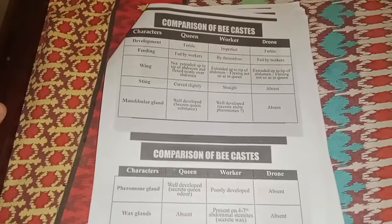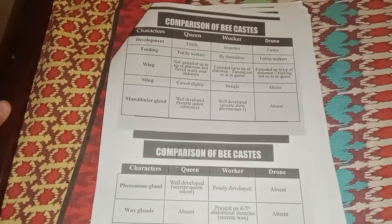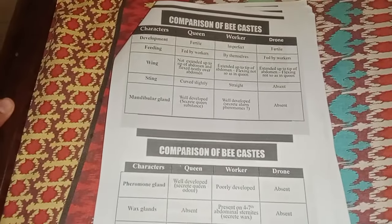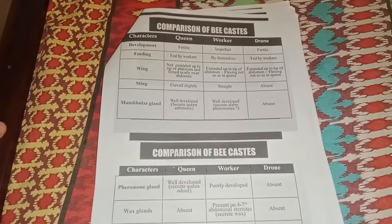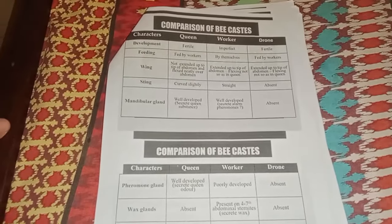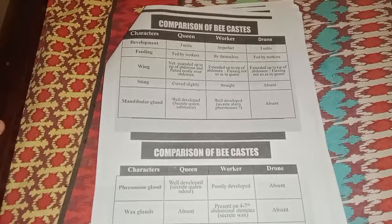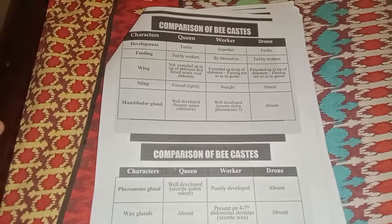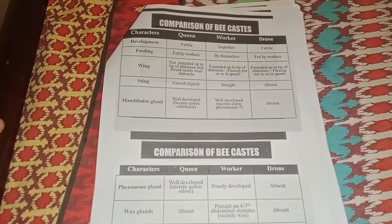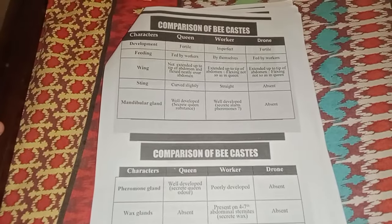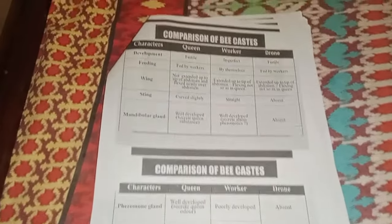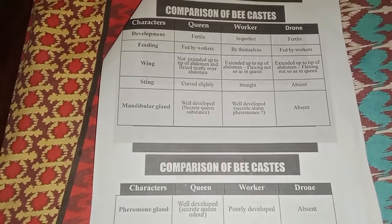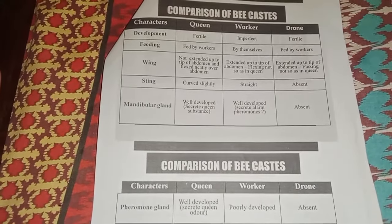Assalamualaikum viewers. In this lecture my topic is comparison of bee castes. In the previous lectures I told you that there are three castes of honey bees: queen, worker, and drone. In this video I will tell you about the comparison of these bee castes. The characters mentioned here are feeding, wing, sting, and mandibular gland.